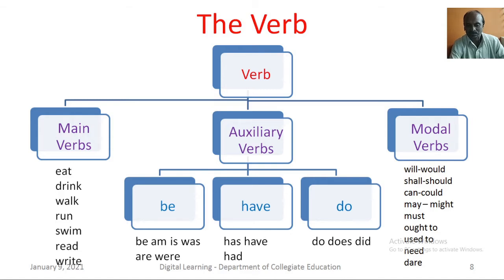The Verb. A verb is a word used to express an action or state. Verbs are mainly classified into three categories: main verbs, auxiliary verbs and modal verbs. Some examples for main verbs are walk, run, eat, drink, read, write, play, jump, swim, etc. The verbs be, have and do are called auxiliary verbs.